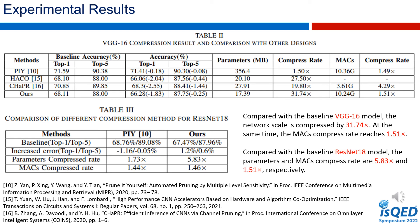Experiments are also conducted on ResNet-18 using the hybrid compression strategy. HRP is applied to all CONV layers except the first layer, and the weights are quantized to 8 bits for all CONV layers and to 4 bits for the FC layers. As shown in Table 3, a 5.83 times compression rate as well as a 1.46 times MAC compression rate are achieved with only 0.6% accuracy degradation. Compared with PIY, the proposed method has better compression performance.